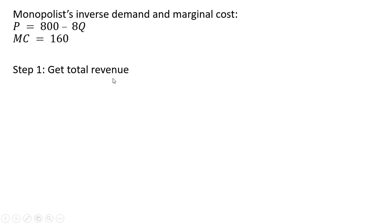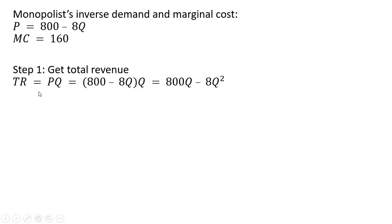Step one, we're going to get the total revenue for the monopolist. Total revenue is price times quantity, where the price is 800 minus 8q — that's plugged in for the p term — so 800 minus 8q is all multiplied by q. Simplifying, we get the total revenue equation.